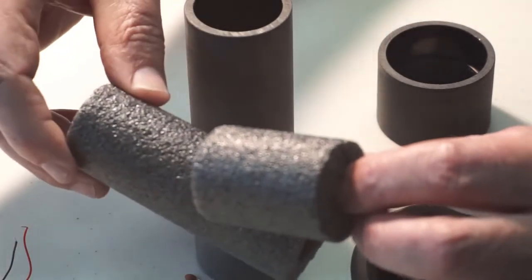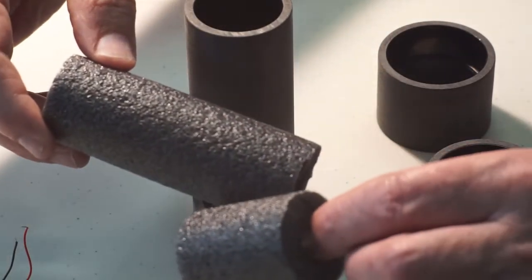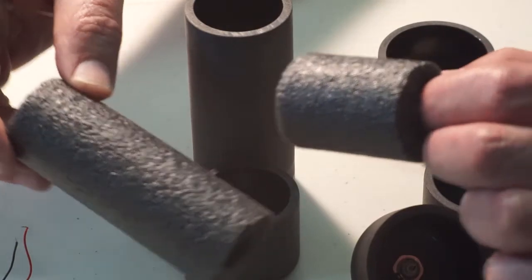This is half inch pipe insulation foam. One piece 2 inches long, one piece 4 inches long.